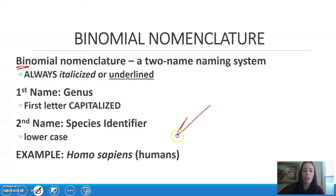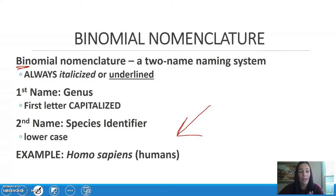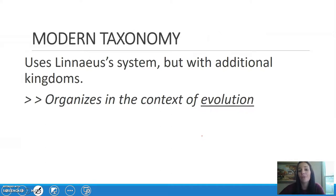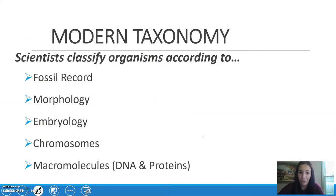For example, looking at homo sapiens — humans — you notice that the H is capitalized, the S is not, and it's two names. You don't want to combine them into one. When we look at modern taxonomy, we do use Linnaeus' system, but there are additional kingdoms which further organize organisms in the context of evolution.